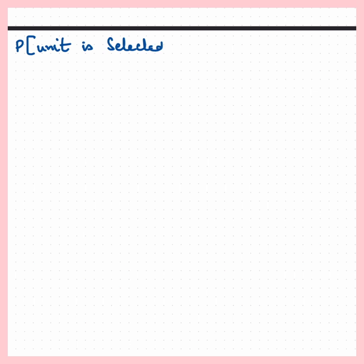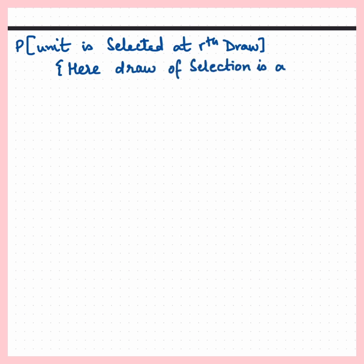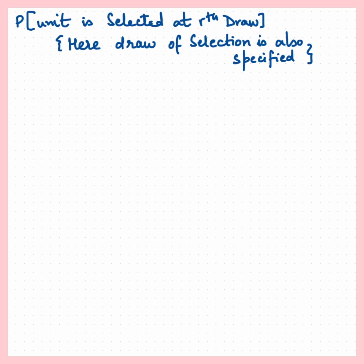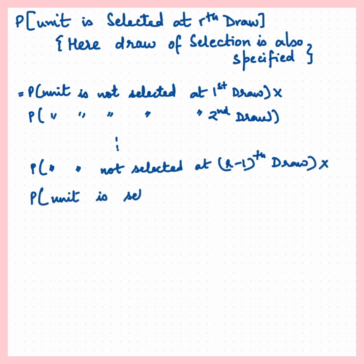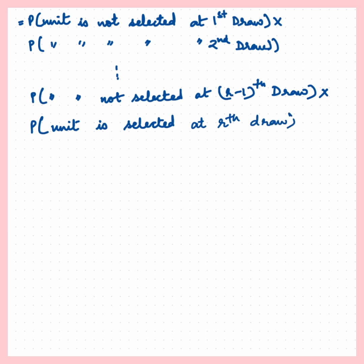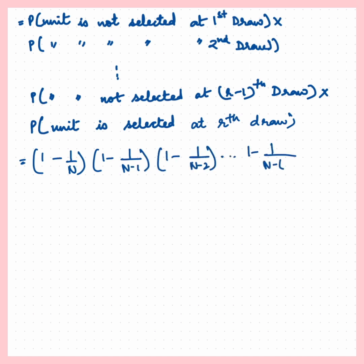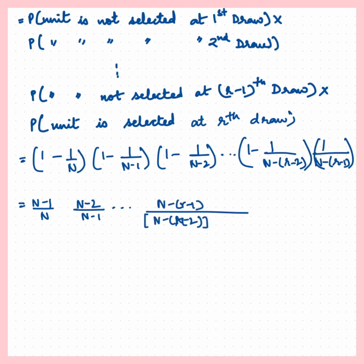Now we consider the probability of a unit getting selected at the rth draw, where the draw of selection is also specified. The probability that a unit is selected at the rth draw equals the probability that the unit is not selected in the first draw, not selected in the second draw, and so on until the (r−1)th draw, and then selected at the rth draw. This equals 1/N.